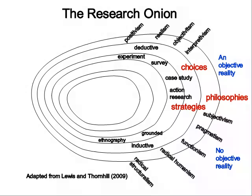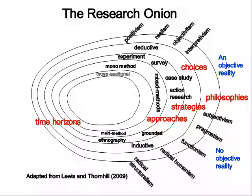The fourth layer from the outside of the research onion concerns the research approaches, where we adopt a mono method involving one research approach, mixed methods where we combine both qualitative and quantitative approaches, and then multi methods.